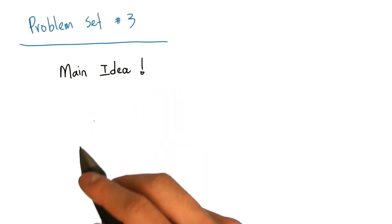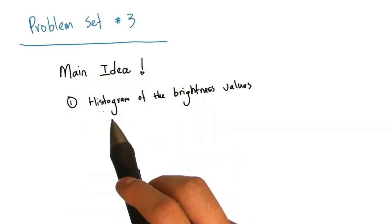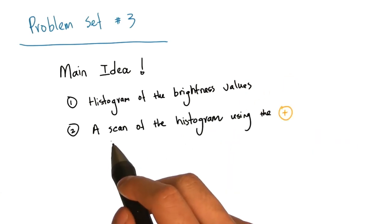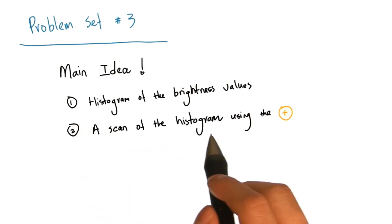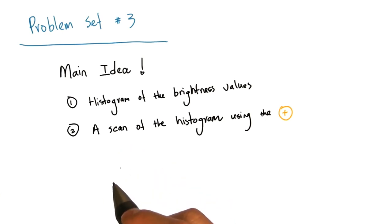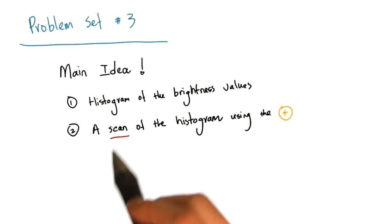The main idea in this homework is to first compute a histogram of the brightness values in the image. After that, we will compute a scan of the histogram using the plus operator. It turns out that the array resulting from the scan tells us exactly how to remap the brightness values in the original image. This is just one of the many really interesting applications to scan, and that is why we are going to focus on scan in this particular problem set.